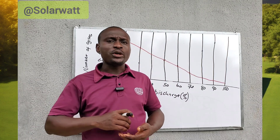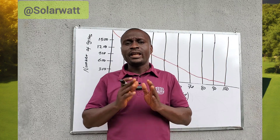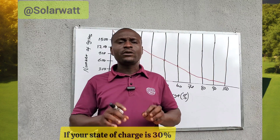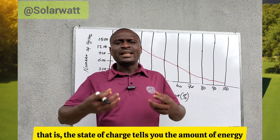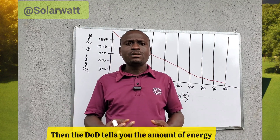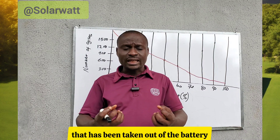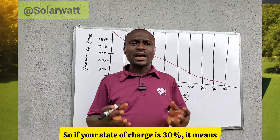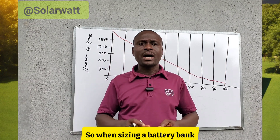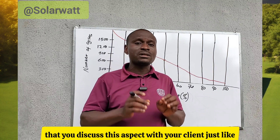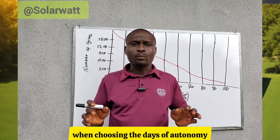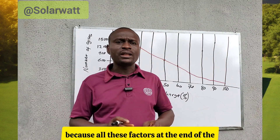DoD and SoC are both represented in percentage. If your state of charge is 50%, it means your depth of discharge — what has been drawn from the battery — is also 50%. The SoC tells you the energy remaining in the battery; the DoD tells you the energy taken out. So if your SoC is 30%, your DoD is 70%. When sizing a battery bank, it is very important that you discuss this with your client.